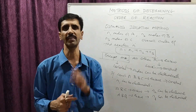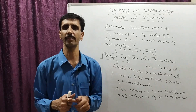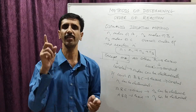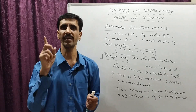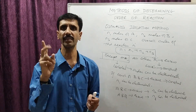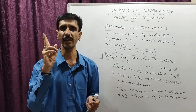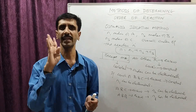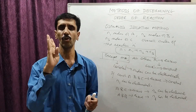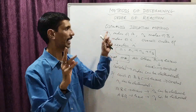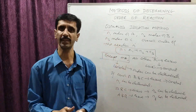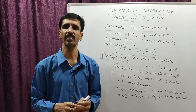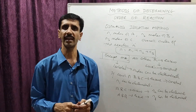These are the four methods of determining the order of reaction: the first is the integration method, the second is the graphical method, the third is the equifractional method, and the last is Ostwald's isolation method. I am very sure, my dear friends, that you will understand these four methods.